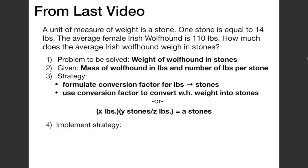Implementing that strategy, we're just plugging in the information from step two into the strategy from step three, and we obtain 110 pounds times one stone per 14 pounds, which equals 7.9 stones.